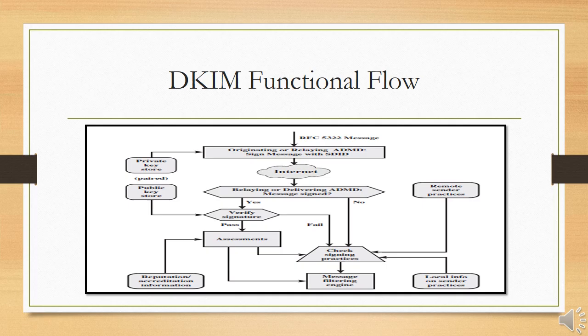Basic message processing is divided between a signing Administrative Management Domain (ADMD) and a verifying ADMD. At its simplest, this is between the originating ADMD and the delivering ADMD, but it can involve other ADMDs in the handling path. Signing is performed by an authorized module within the signing ADMD and uses private information from a key store within the originating ADMD. This might be performed by an MUA, MSA, or an MTA.